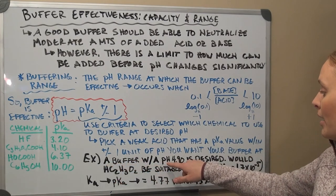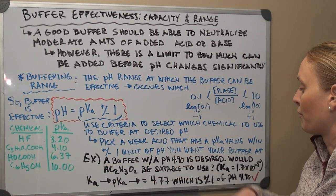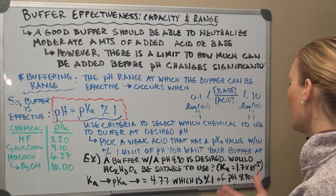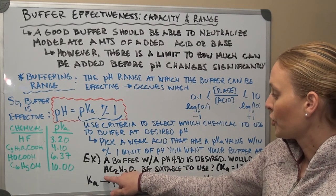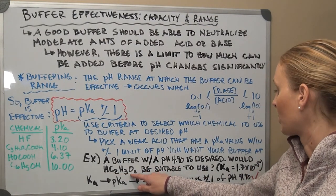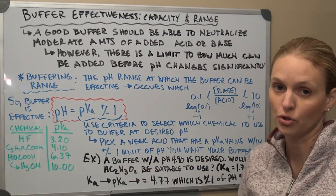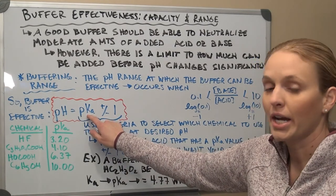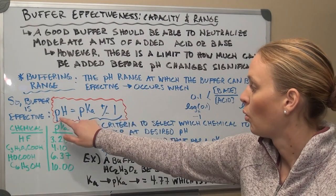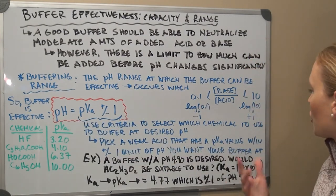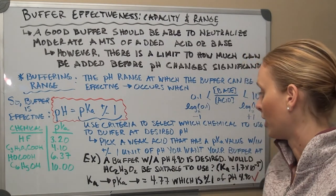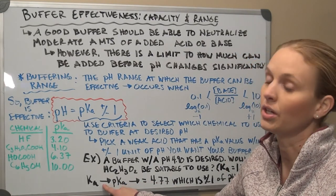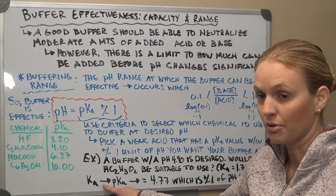Example problem number 4: we want to make a buffer at pH 4.90. Would acetic acid and sodium acetate be suitable? We check the pKa of acetic acid: Ka = 1.7 × 10⁻⁵, so pKa = −log(1.7 × 10⁻⁵) = 4.77. Is 4.77 within ±1 of 4.90? Yes — so acetic acid is a valid choice to buffer at pH 4.90.